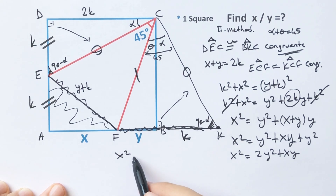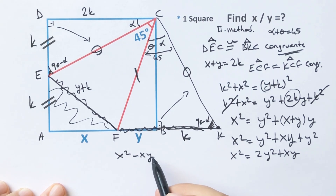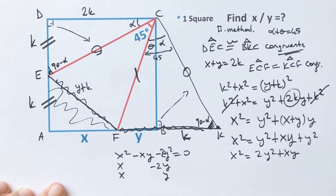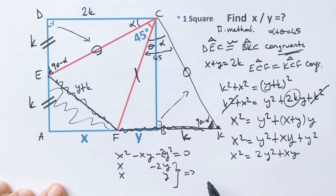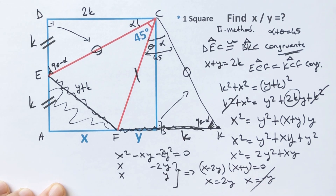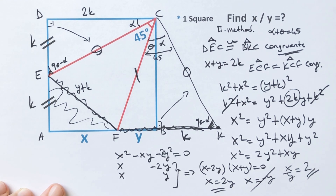So x squared minus xy minus 2y squared equals 0. If we factorize the expression: (x minus 2y)(x + y) equals 0. So x equals 2y, and x cannot be negative, which means the ratio of x over y equals 2.